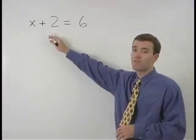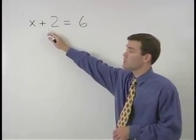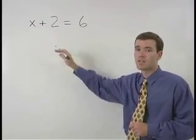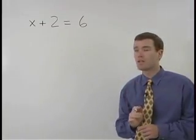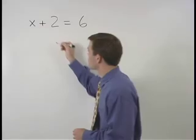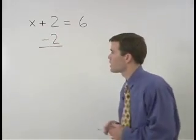So if we take a look at the left side of our equation, a 2 is being added to x. So in order to get x by itself, we must subtract 2 from the left side of the equation.